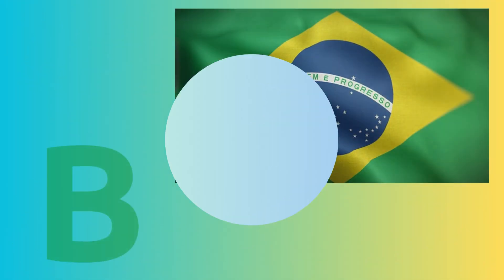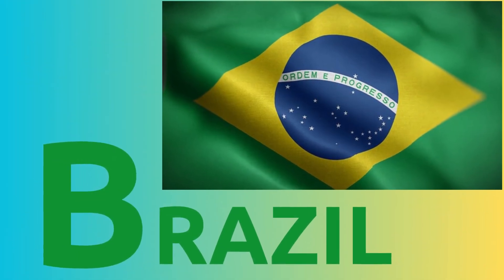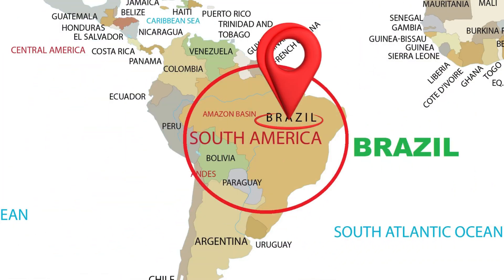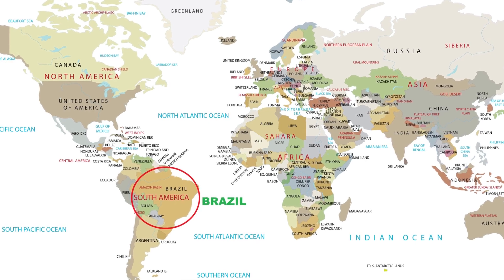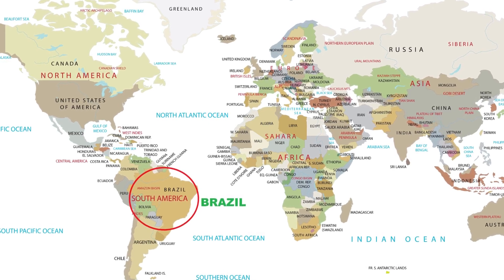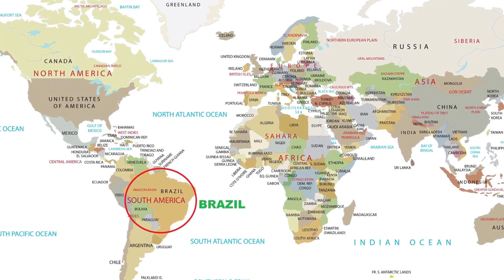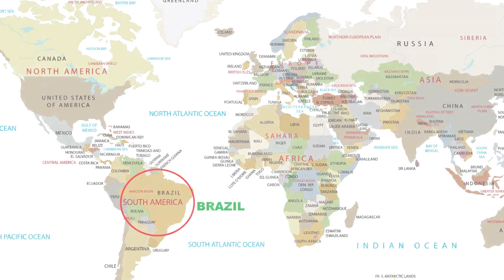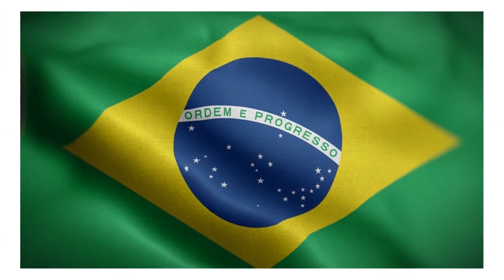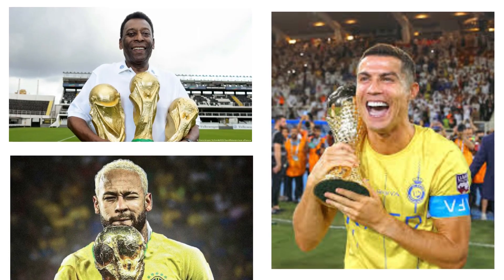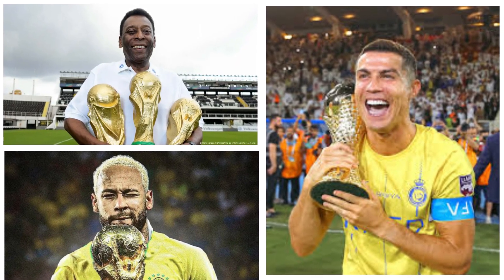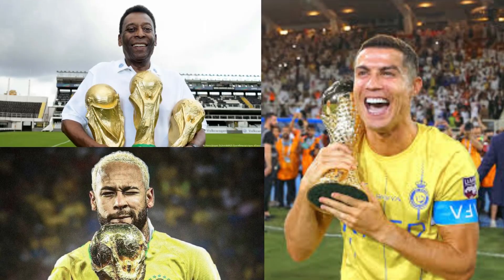B. B for Brazil. Official name: Federative Republic of Brazil. It is the fifth largest country in the world. Around 60% of the Amazon rainforest is in Brazil. The Brazilian flag has 27 stars on it. Pelé, Ronaldo, and Neymar are famous Brazilian football players.